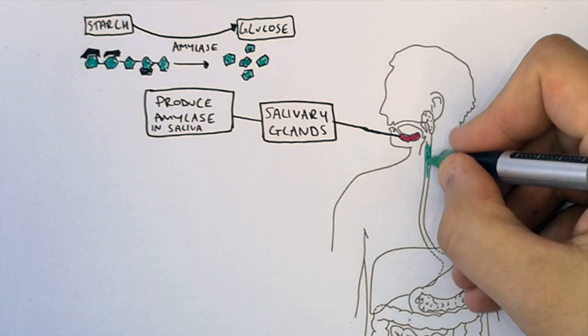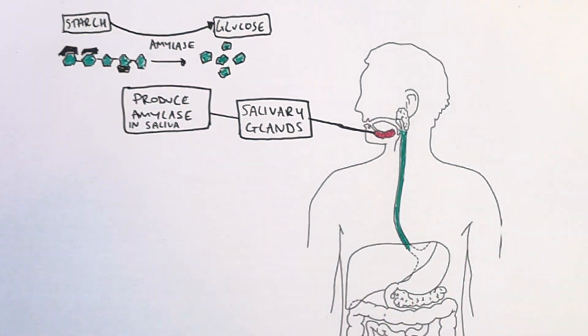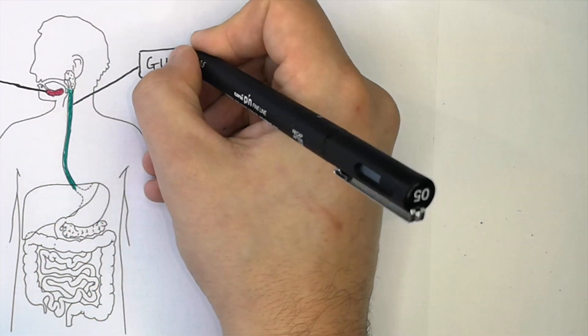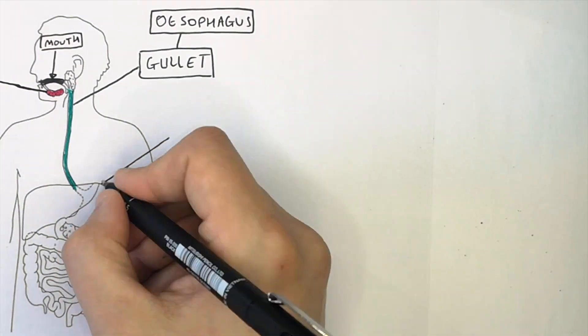Once the food is small enough to swallow, it is transported via the gullet or esophagus from your mouth to your stomach.